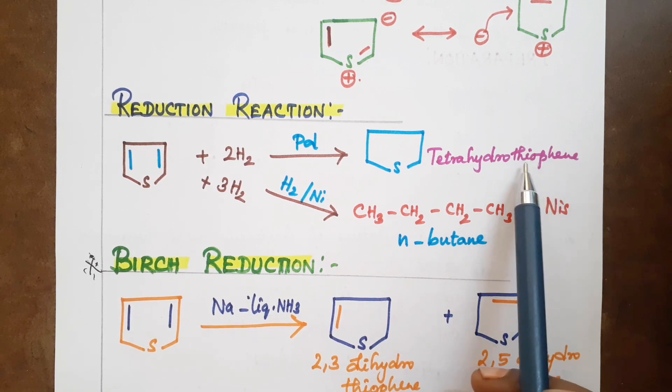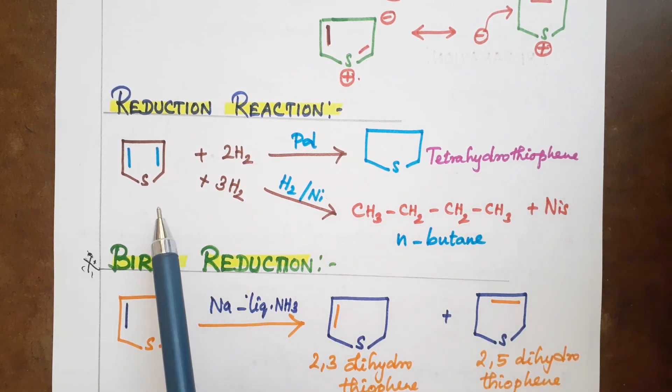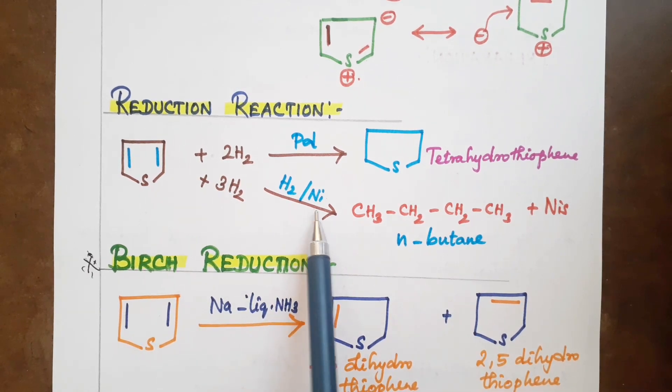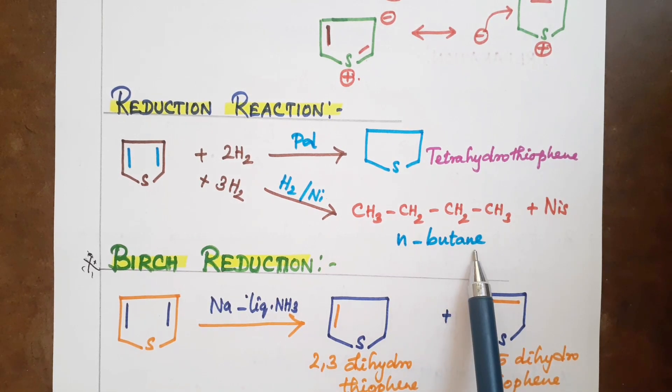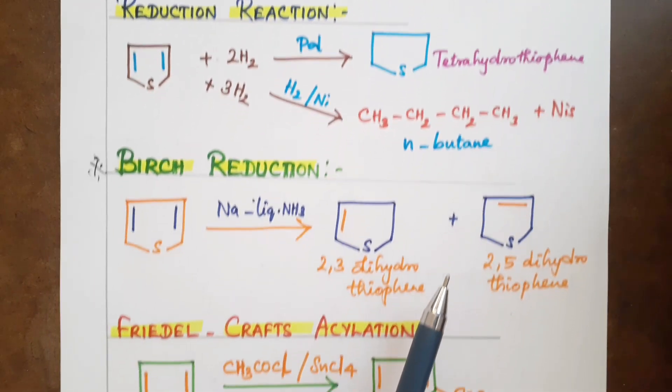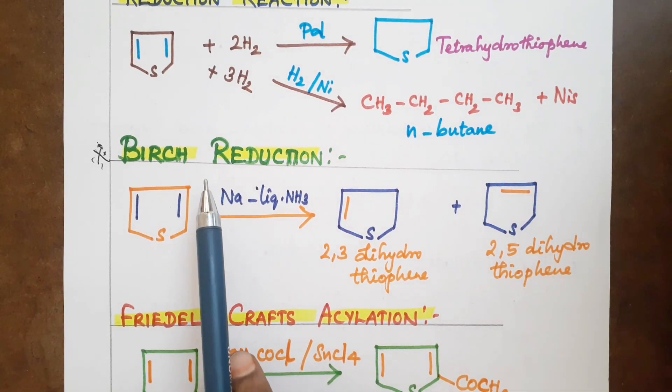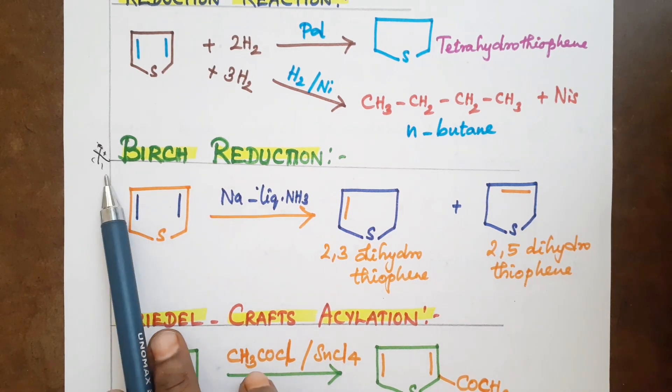Now we see another method. Thiophene undergoes reduction in presence of nickel, giving n-butane: CH3-CH2-CH2-CH3. This is an important character of thiophene.